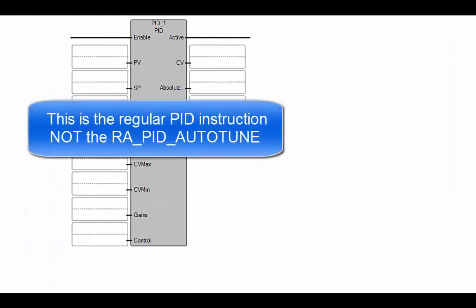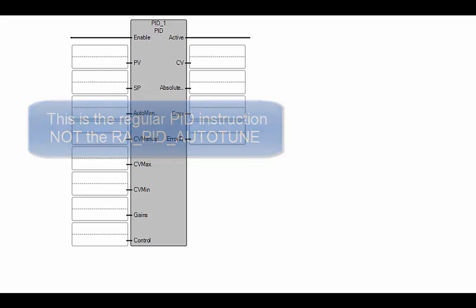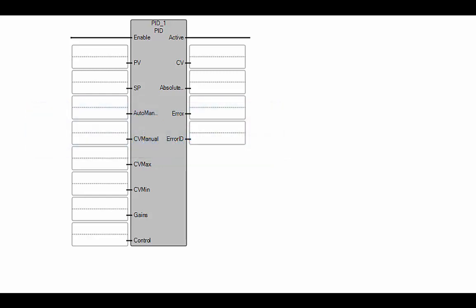Before I explain the auto-tuning function you've just downloaded, let's review the regular PID instruction in Connected Components Workbench. Here's the instruction used in a ladder diagram. You'll notice it has an input for a process variable — that's the measured value from our process that we're trying to control. In our case, it's the level of the tank. It also has an input for the set point, which is the desired level for that process variable.